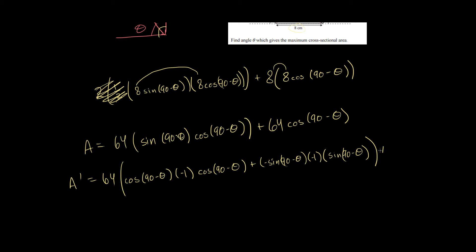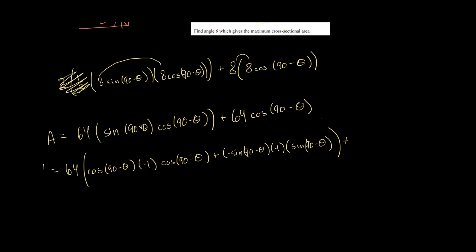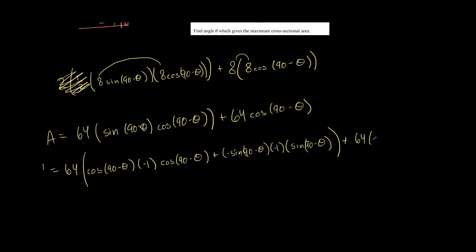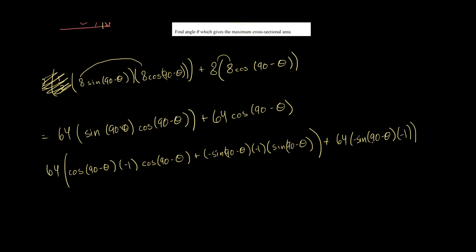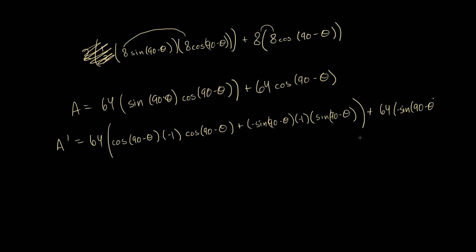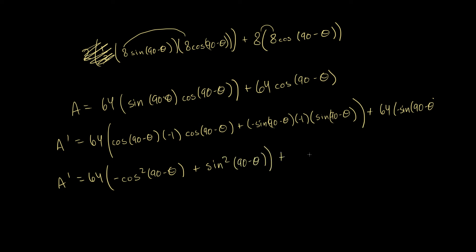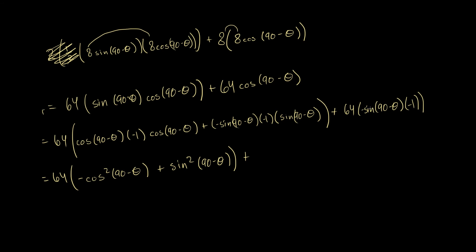Plus, we've got to take the derivative of the remaining term, which gives us 64 times negative sine(90 minus theta) times negative 1. Let's simplify. A prime equals 64 times: cosine times cosine times negative 1 gives negative cosine squared(90 minus theta), plus negative sine times sine times negative 1 gives plus sine squared(90 minus theta), plus negative 1 times negative sine times 64 gives 64 sine(90 minus theta).